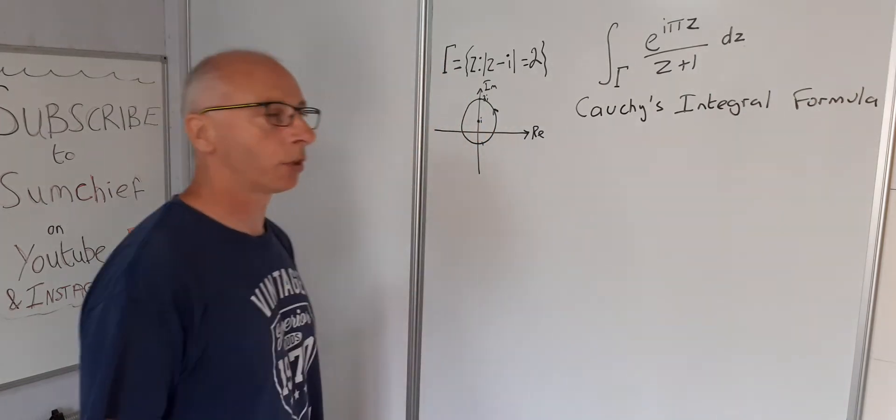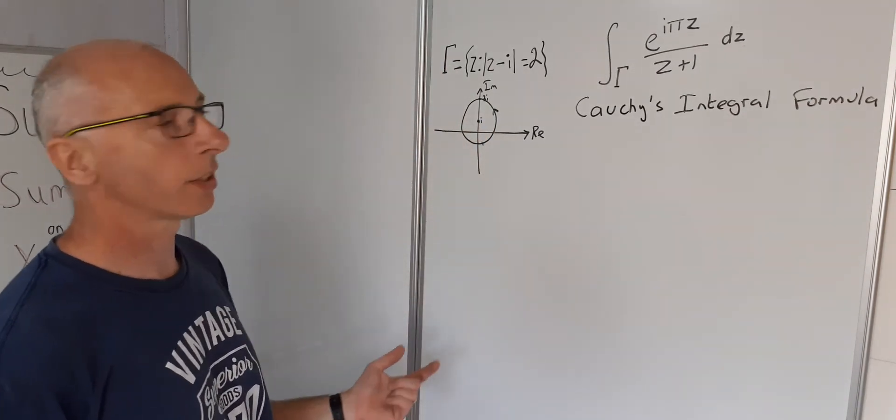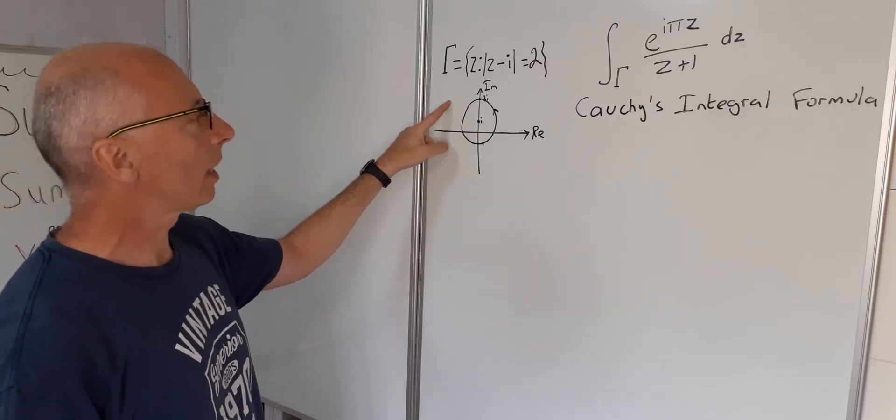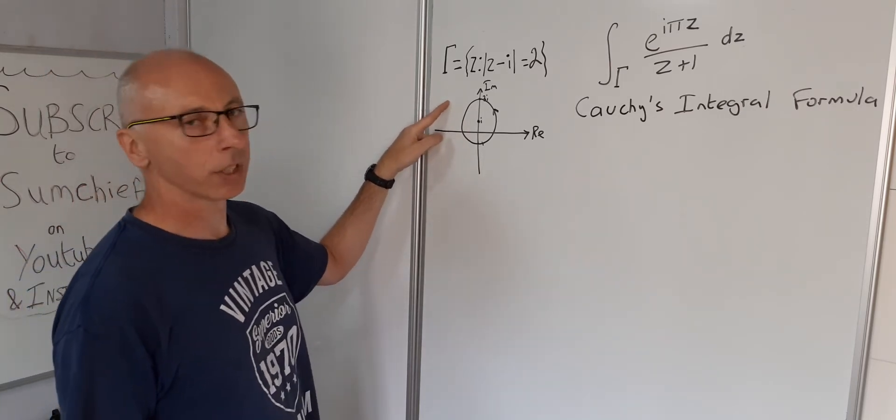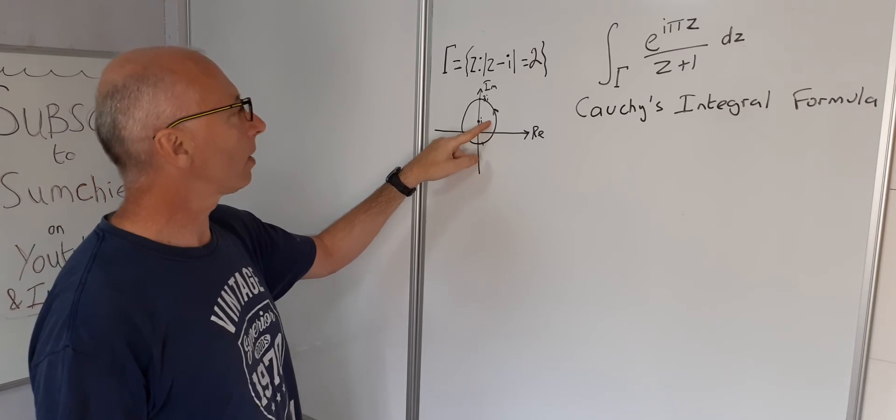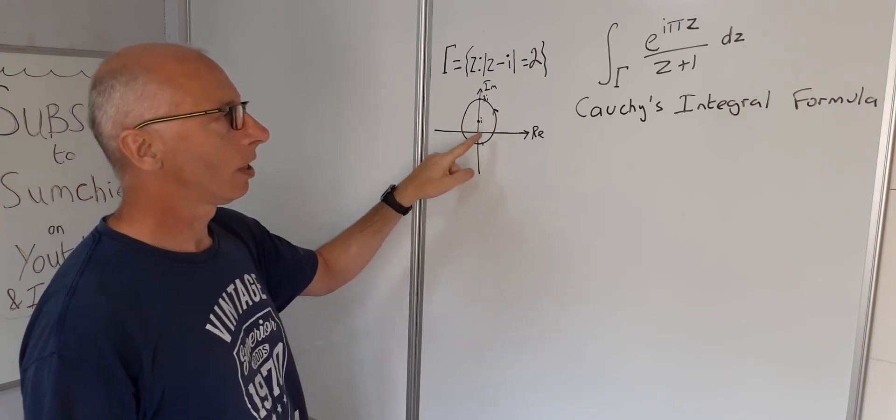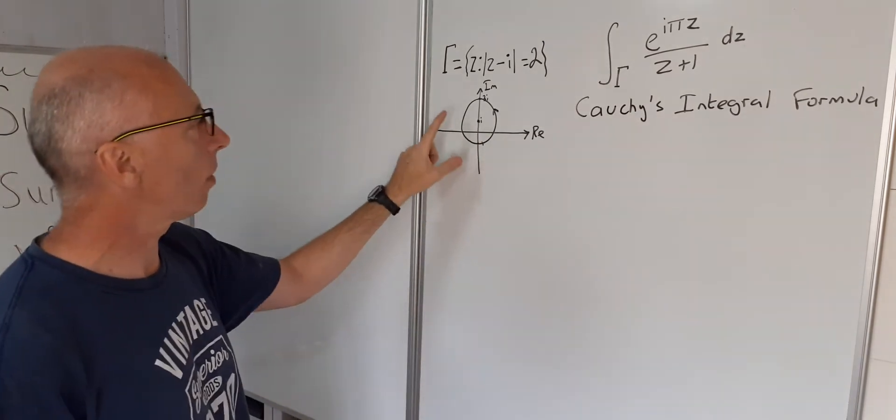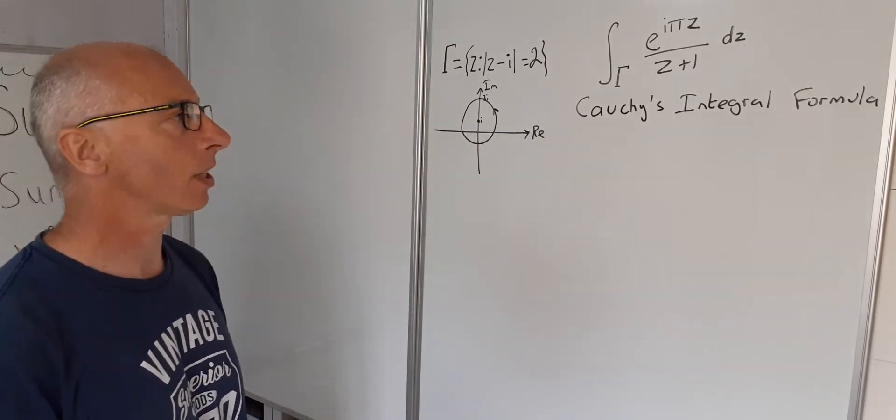Now when using Cauchy's integral formula, you've got to be a little bit careful to get the conditions right. So I was just saying there that the complex plane is a simply connected region and this here is a simple closed contour. So that's one of the conditions for Cauchy's integral formula. If you haven't got that, then you can't proceed with Cauchy's integral formula.